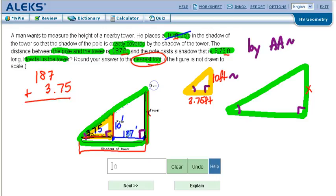So keep that in mind. 187 was not the shadow of the tower. We have to add these together. That's 7.5, 10 carry the 1, 90. So here is 190. The shadow of the tower is 190.75.